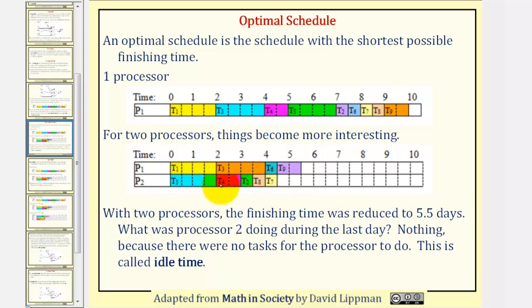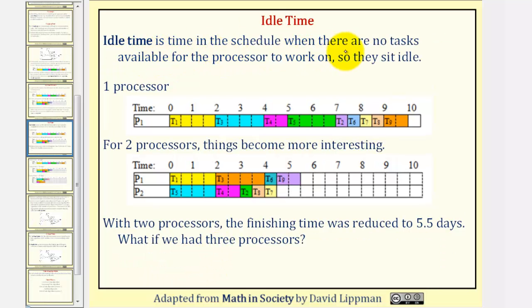But you might be asking, what did processor two do during this last day? Notice how they're not completing a task, and therefore the processor is doing nothing. This is called idle time. Idle time is time in the schedule when there are no tasks available for the processor to work on, so they sit idle.